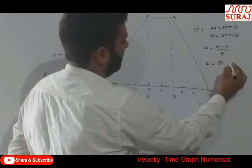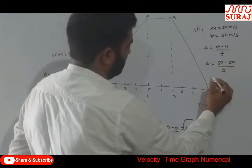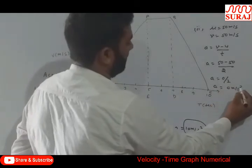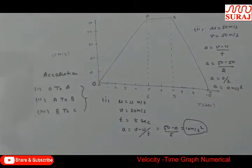So acceleration is equal to 50 minus 50 by 2 seconds. So A is equal to 0 by 2. So A is equal to 0 meter per second square. This is the second case.